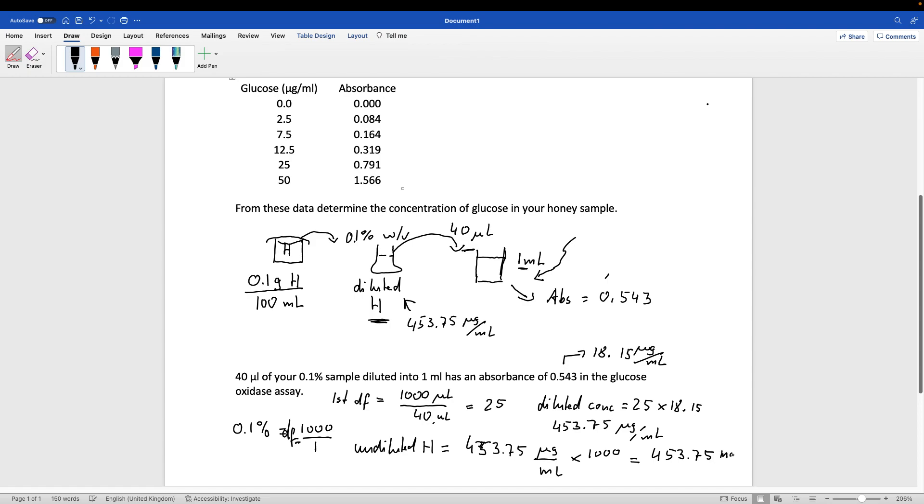Milligram per milliliter and that would be the concentration of the glucose in the undiluted honey. 453.75 milligram per milliliter here in the undiluted honey.